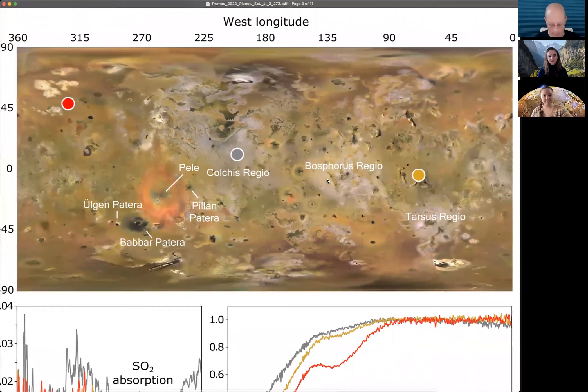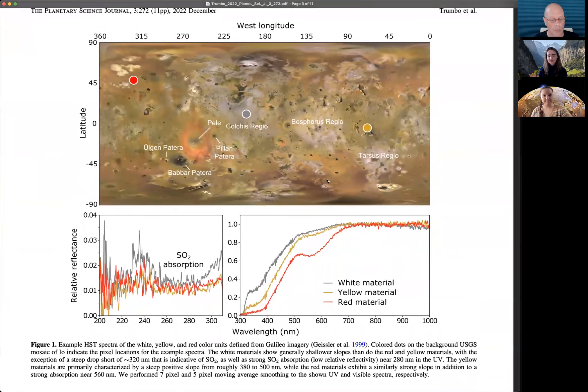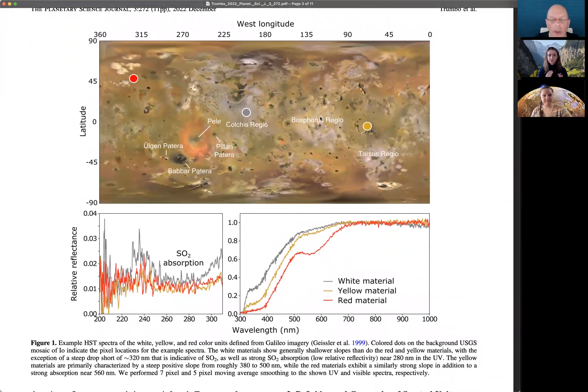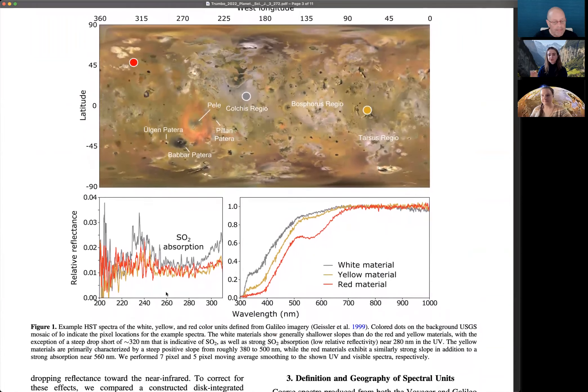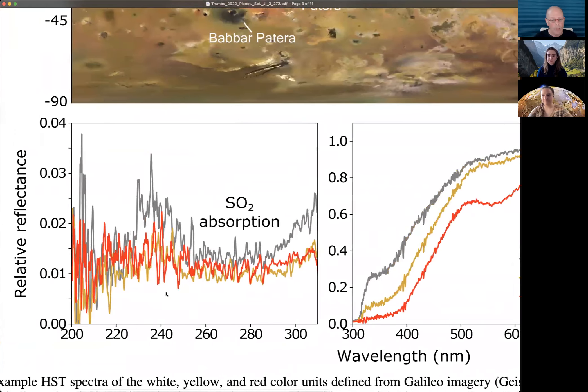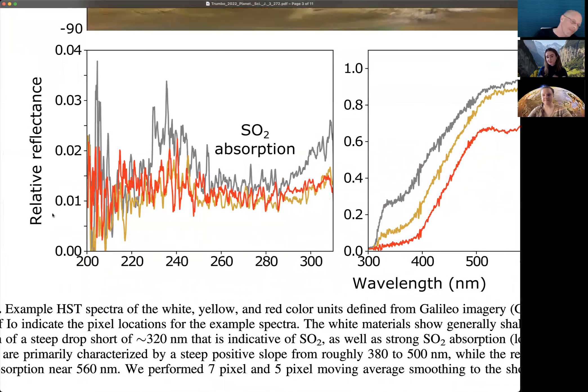So Galileo saw this redness very acutely associated with volcanic centers. And so that makes it really interesting. And then at an even finer scale, they had black materials, which were interpreted to be potentially silicate rich, associated with the actual lavas coming from these volcanoes. That's associated with the little dark spots you can see on this map. What we're doing in this figure is we are using our global HST data set to pull out just representative spectra of three of those four color units: the white material, yellow material, and red material, which we could resolve well at our spatial resolution, to show this is what an actual spectrum of those materials looks like, which was not entirely known before.